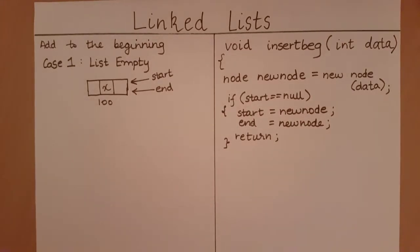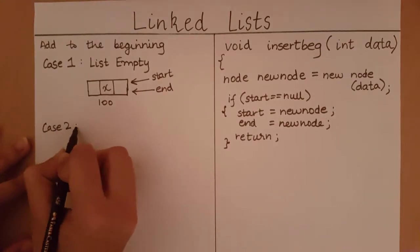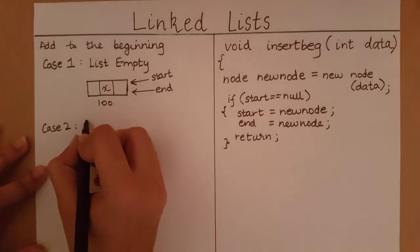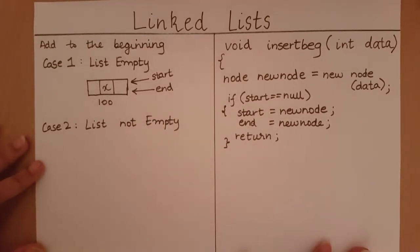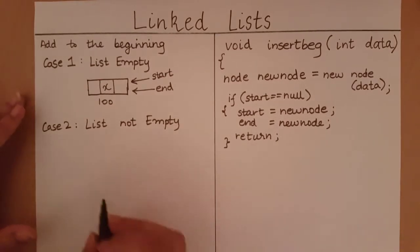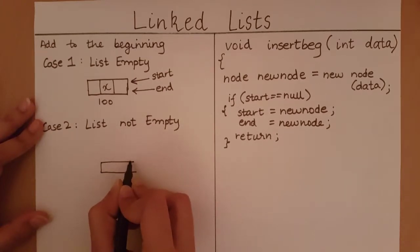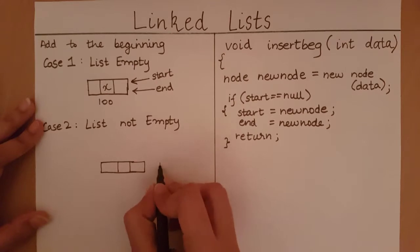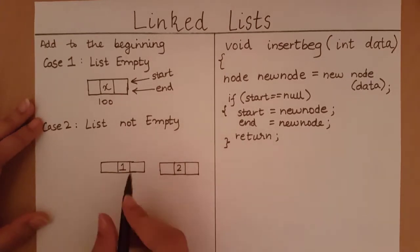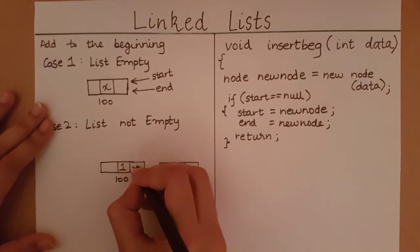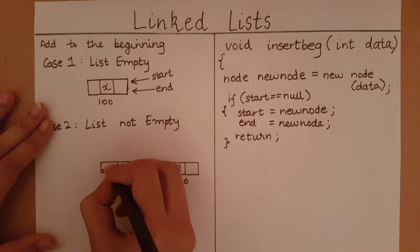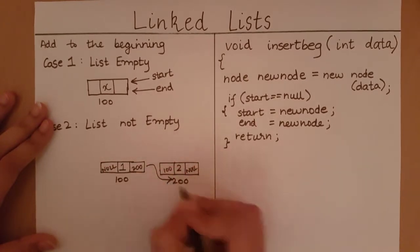Now let's look at the other case which we must encounter. The second case is the list is not empty. So let me give an example of a pre-existing list. Let us say this is my list which has the elements 1 and 2 stored in the addresses 100 and 200 respectively. So this is going to be my starting node and this is going to be my ending node.